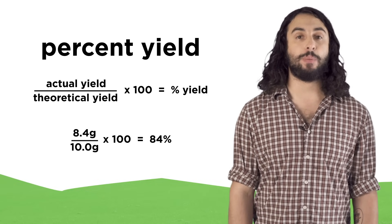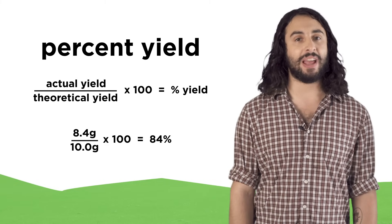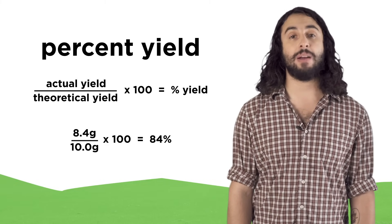Percent yield is an important measure of the efficiency of a chemical reaction or technique and is very useful in planning syntheses of organic compounds. Let's check comprehension.